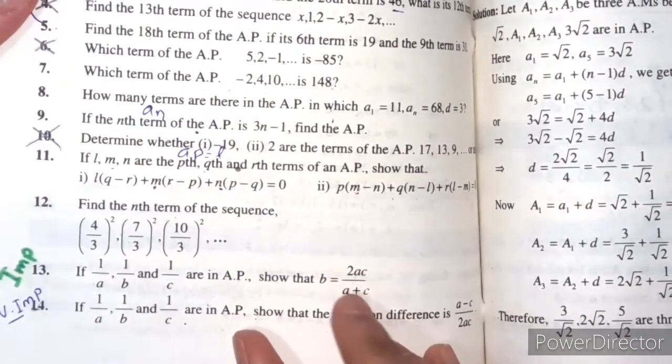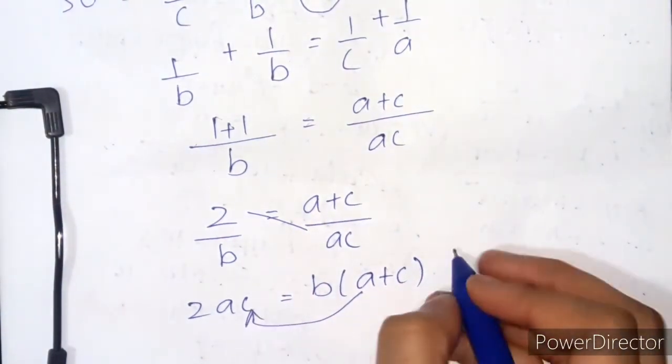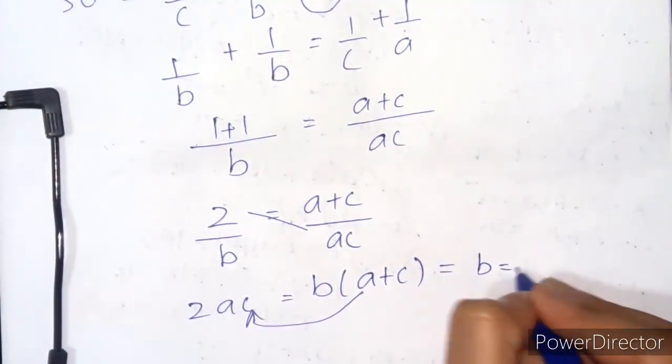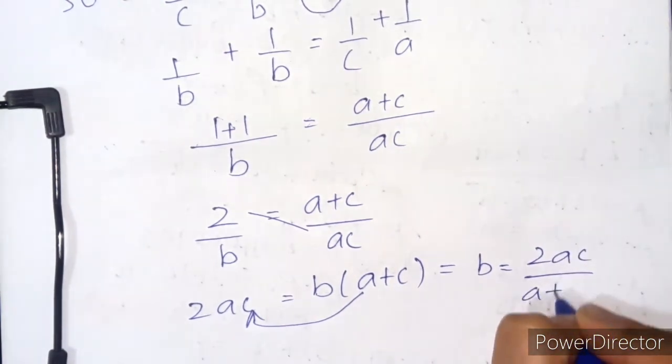2ac divided by (a+c). Dividing both sides, we get the value of b: 2ac/(a+c). Proved.